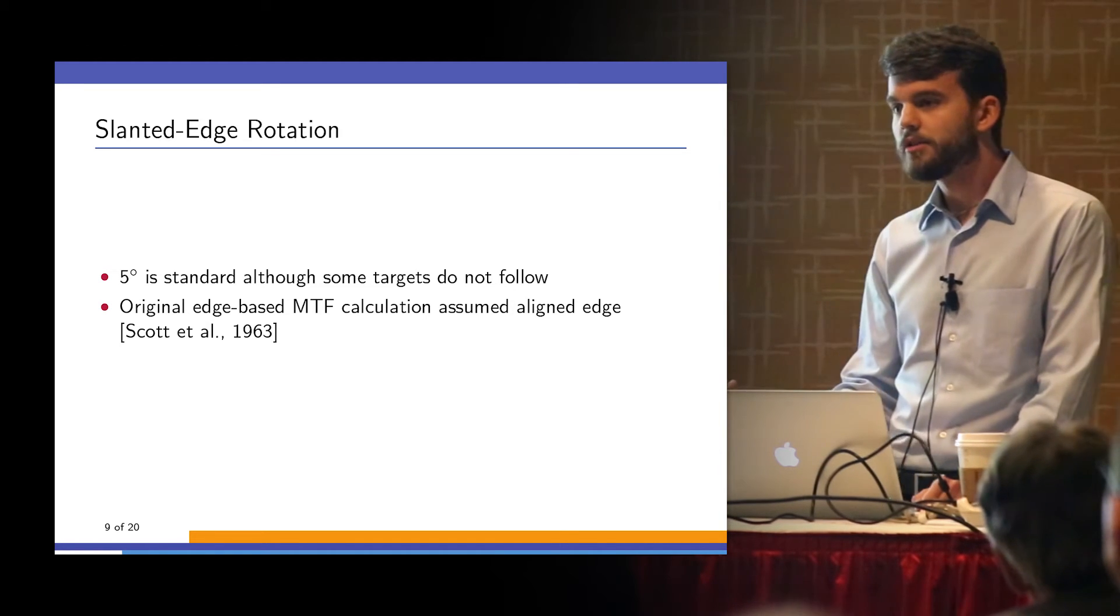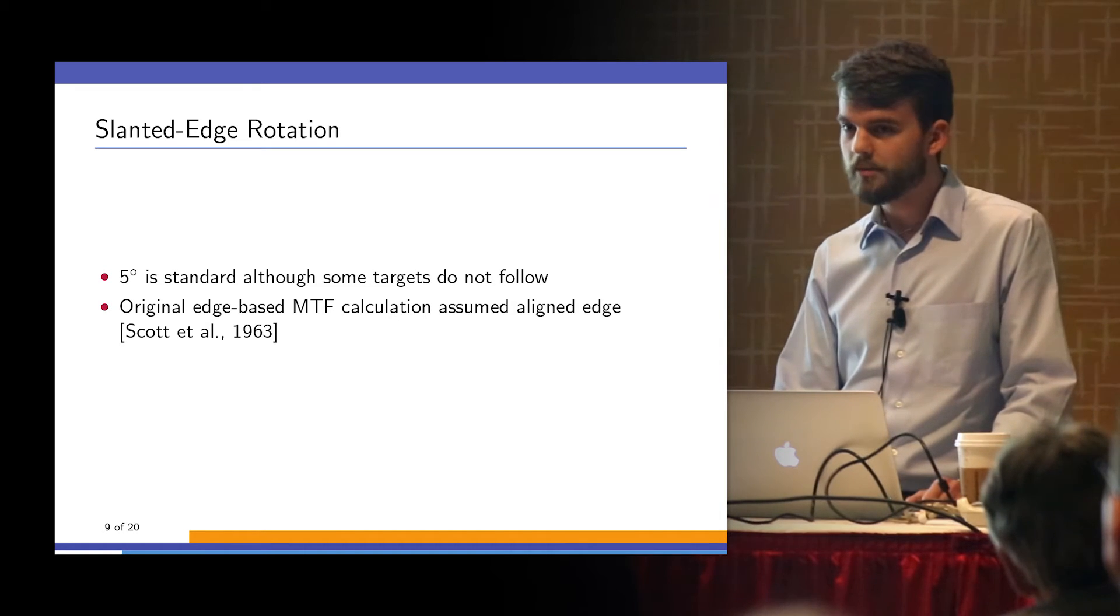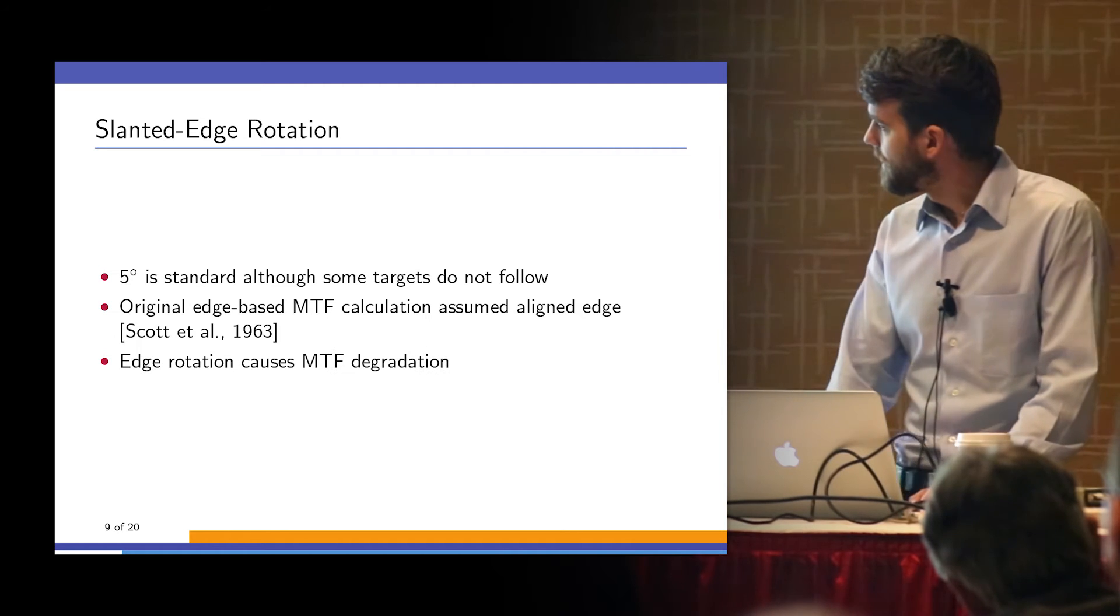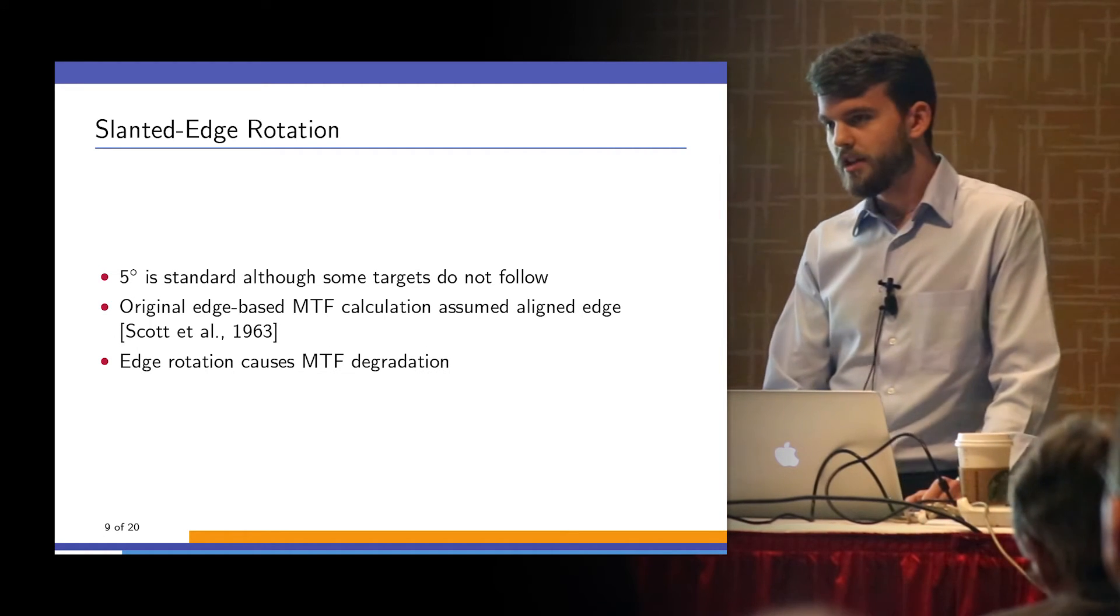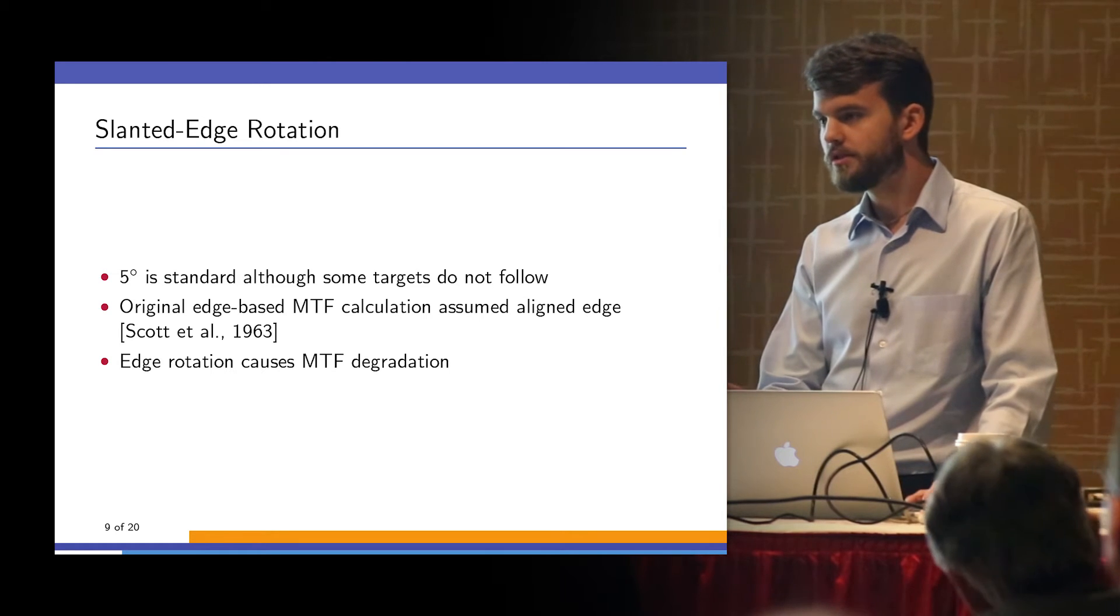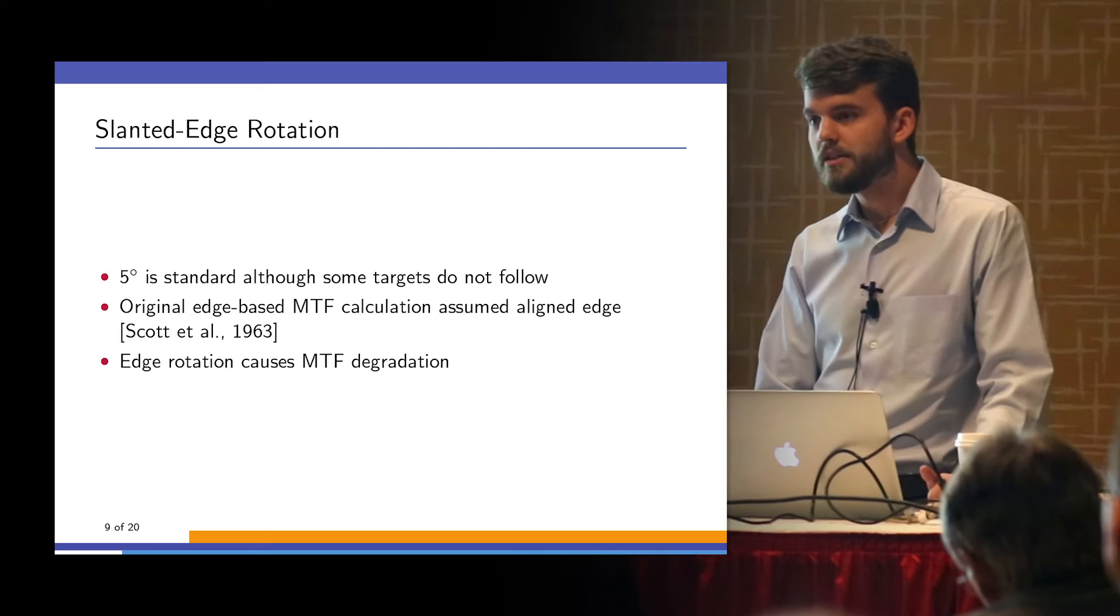Basically your sampling grid is perfectly aligned with your edge. But for the slanted edge algorithm, you can't do that because if your edge is perfectly aligned with the sampling grid, you've lost your phase change. Any edge rotation as you go away from zero degrees from the sampling grid starts to degrade the MTF.